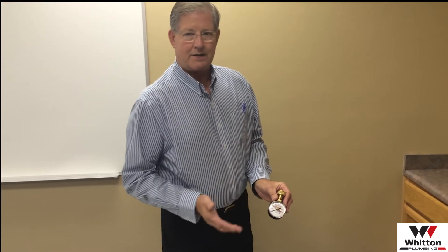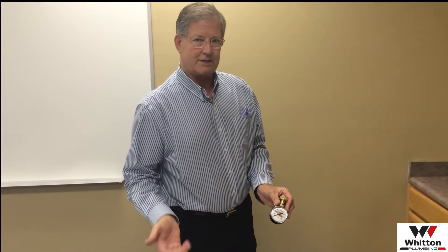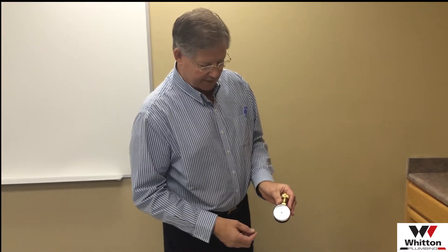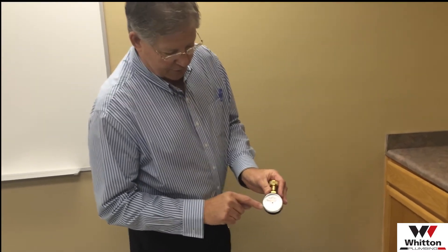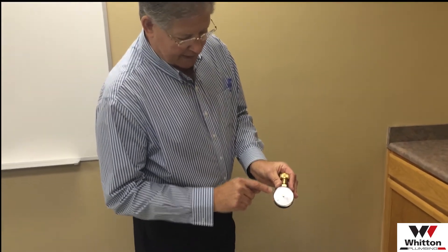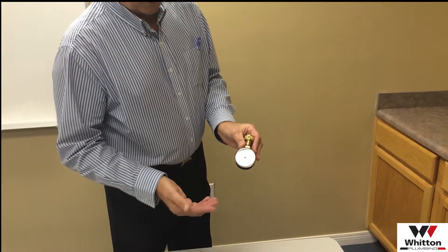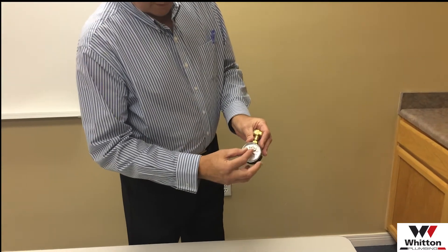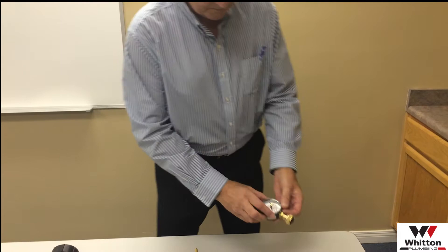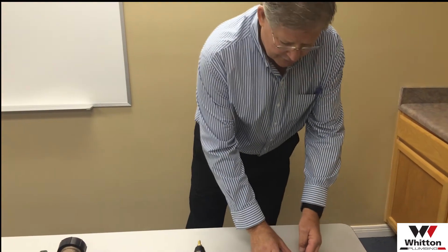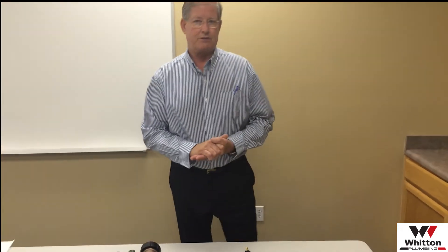Then have somebody in the house go turn the tub faucet on and the kitchen faucet on — that's what's called residual pressure — and this black dial should move down because you're using water. So you can mark it static or residual, and that will give you an indication of the pressure that's in your home.